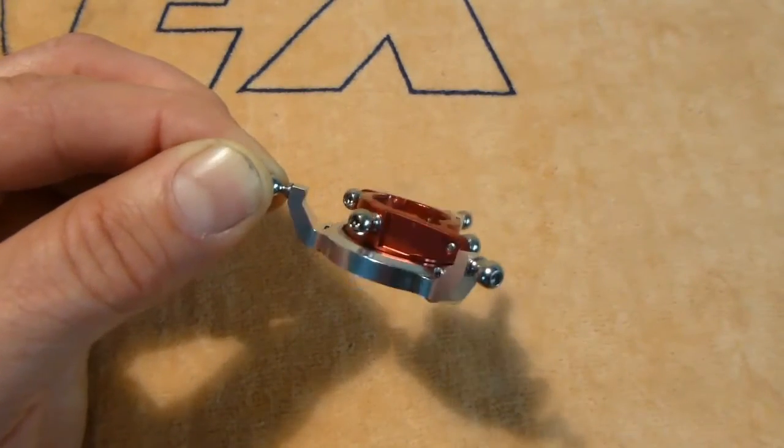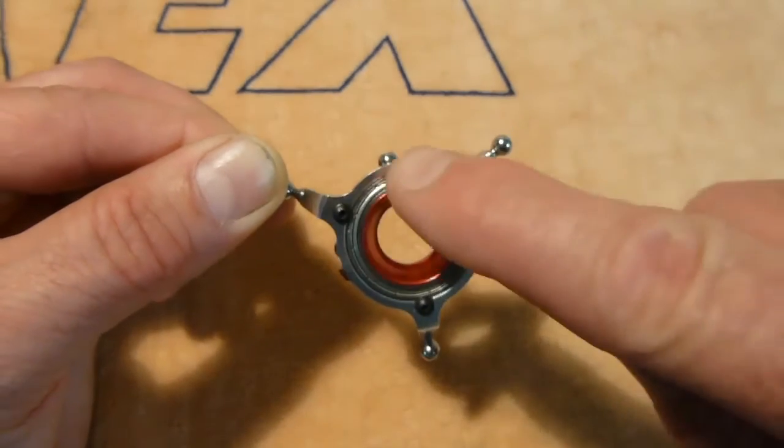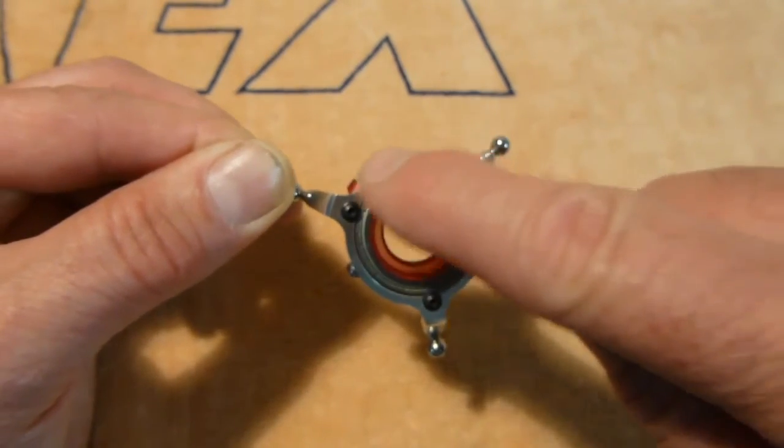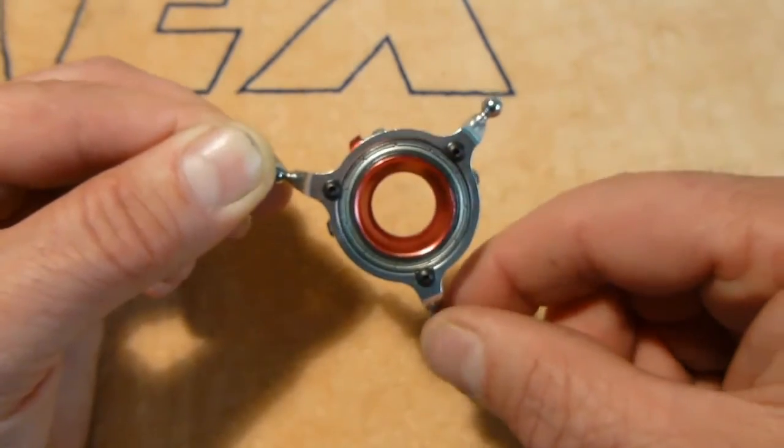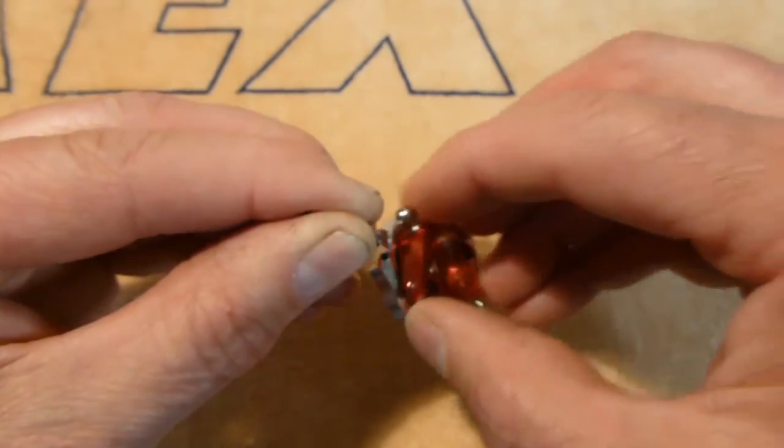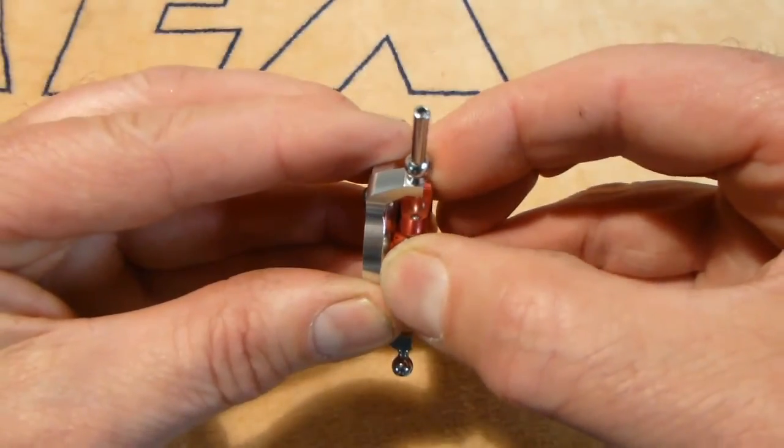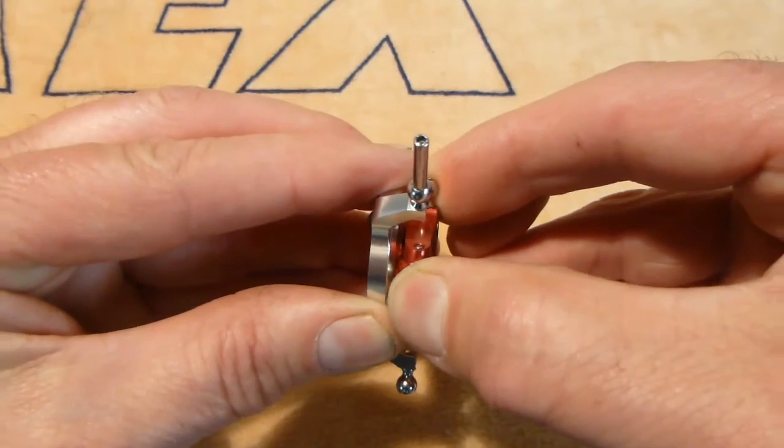The other issue with this swash plate is this bearing, this outer ring bearing here. The bearing itself is not that precise. I notice there's a bit of slop when you move the two pieces apart, there's a bit of play there.